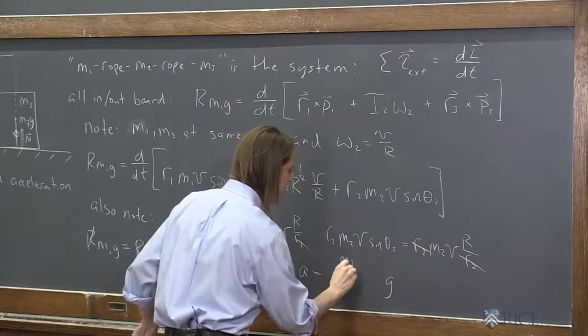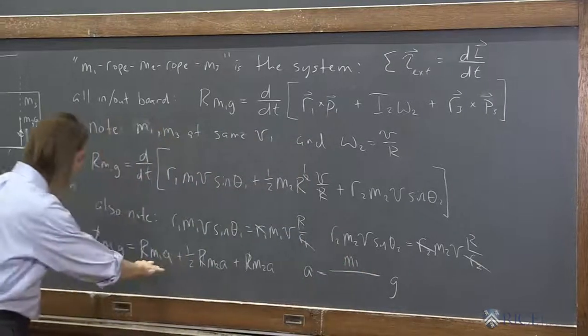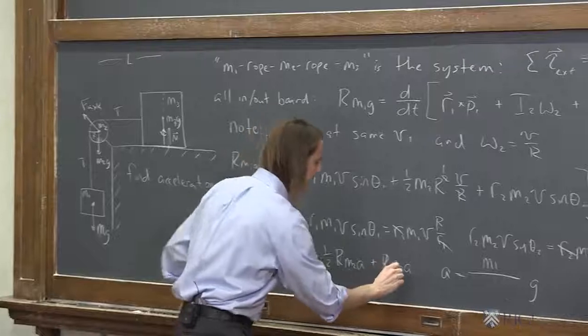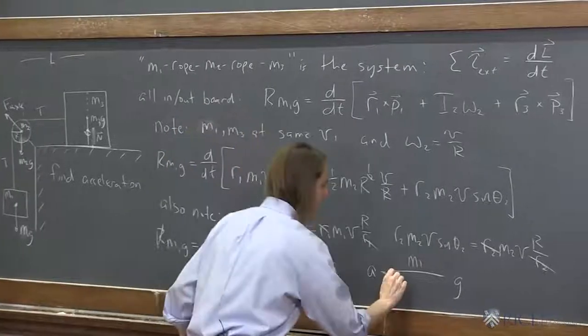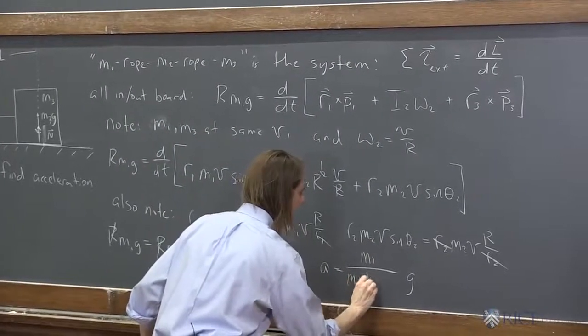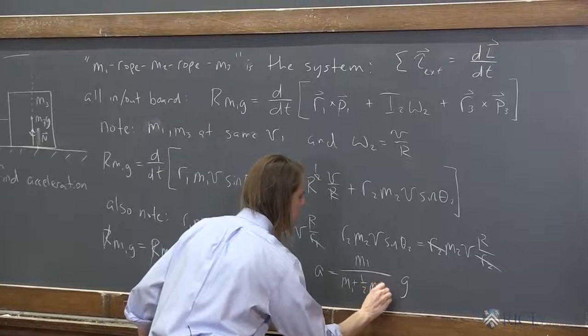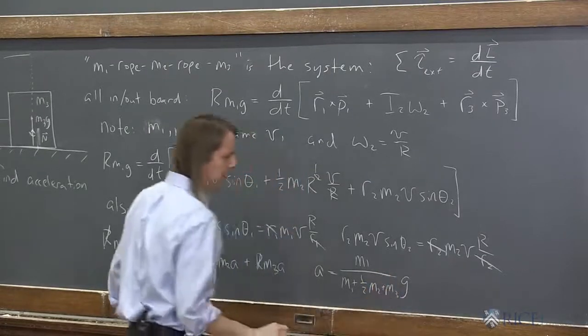So I'm going to put the G out here to get a ratio, a fraction that's unitless, M1. And on this side, all we're left with is M1 plus 1 half M2 plus M3. M1 plus 1 half M2 plus M3, like that.